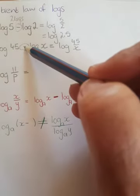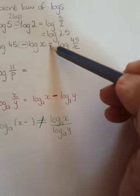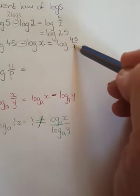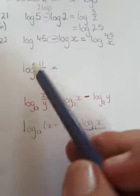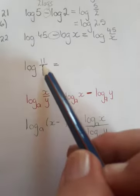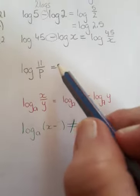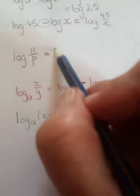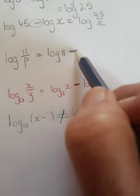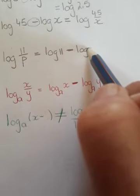We have the difference of two logs, which equals the single log of their quotient, so the division. If we look at this example again, it is the log of 11 divided by p, so it is a single log. Therefore, the rule applies that it is equal to the difference of their logs — that becomes log of 11 minus log of p.